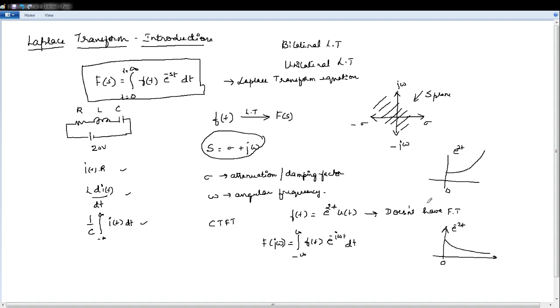Please have a look into it. So this integration will start from zero because of u of T and f of T is e power 2T into e power minus j omega t. This integral will definitely tend to infinity. This will definitely tend to infinity because this is growing type exponential e power 2T.